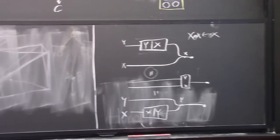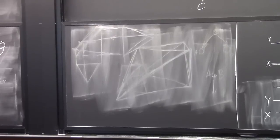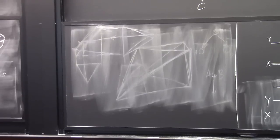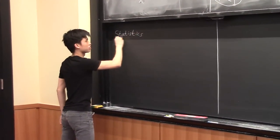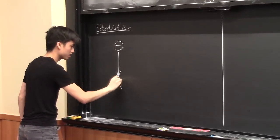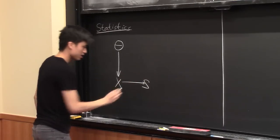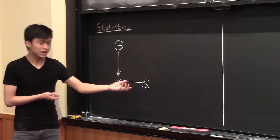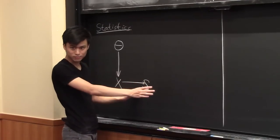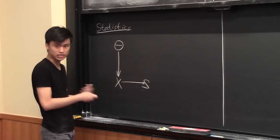Different subject — let's talk about statistics. The general framework is that we have some parameters Θ that generate some observations X. A statistic is just a map from X to S. For convenience, we don't want S to be bigger than needed — we want S to be a retract. If you think intuitively about what your statistics might be — like the average of your data — it's always a retract. So what that looks like is a diagram where S is a retract of X.